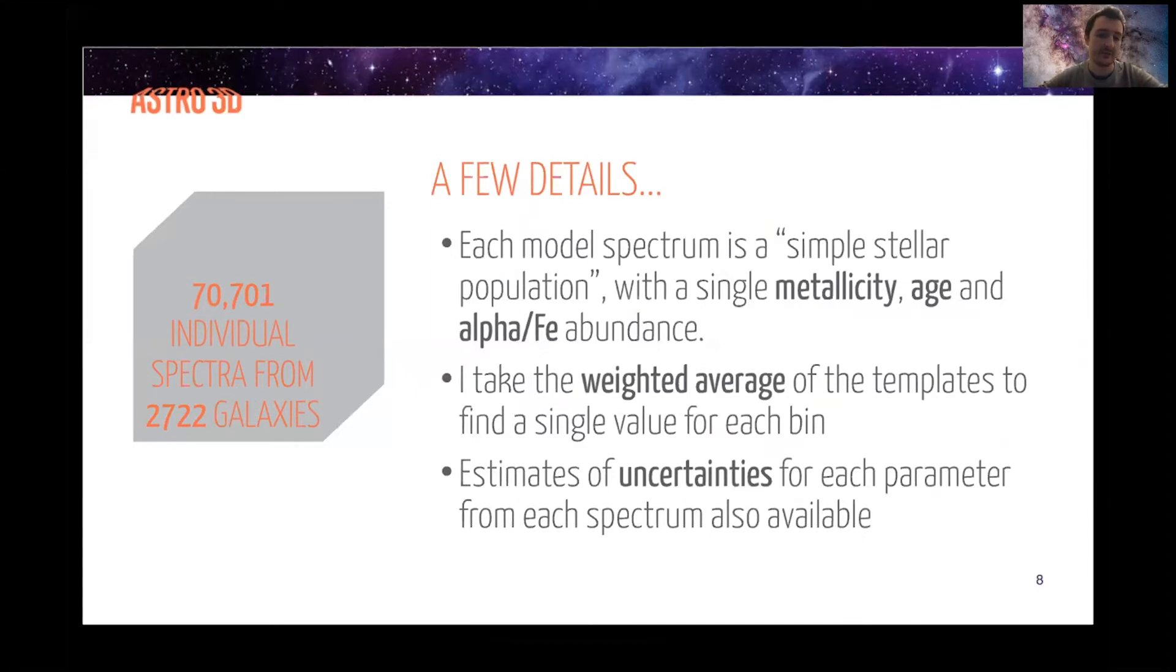So details about my model. Each model spectrum I have is called a simple stellar population. That means we just take a single population of stars with a given metallicity and a given alpha abundance. And then we can evolve these stars to get a snapshot of what their spectrum would look like at a given age. So after one, three, five, 10 billion years, things like that. So each model fit is a combination of all of my model spectra. I get a weight for each spectra to say how important this spectrum is to the overall fit. I then take the weighted average of these values to find a single age and a single metallicity and a single alpha for each bin.